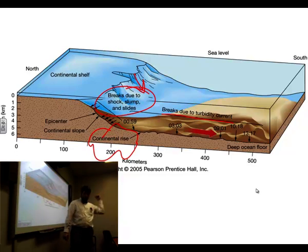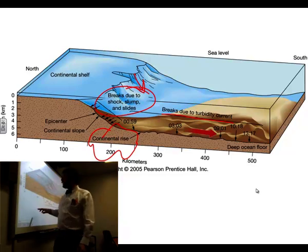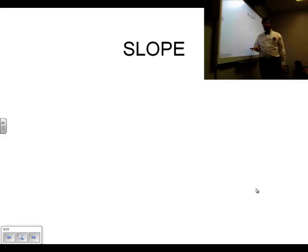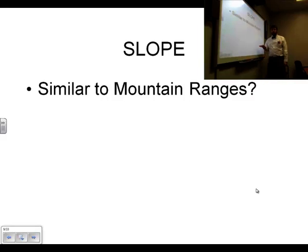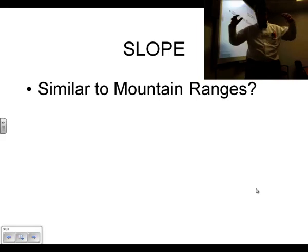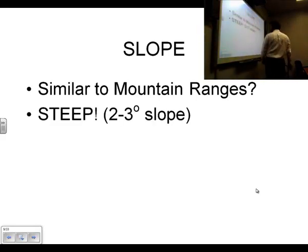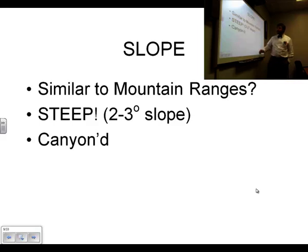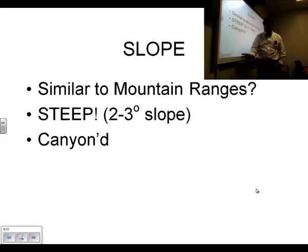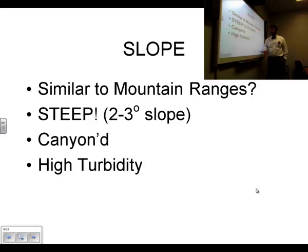Now let's focus on the slope. Continental slopes are very similar to mountain ranges — these things are massive. They usually have a two to three degree slope — not percent, but degree — very, very steep. And they usually have submarine canyons, like the ones you made in your sand castles. You're going to find those in the slope as well.